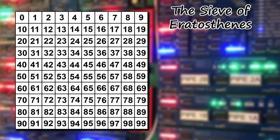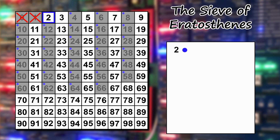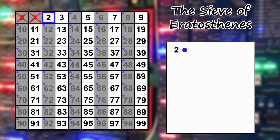We can discard 0 and 1 by definition, and each time we disregard a number we cross it out. The first number we come across that isn't crossed out is 2, so we add that to our list of prime numbers. The next step is to cross out every single multiple of that number, because multiples of a prime can't be prime themselves — in the case of 2, that's all the even numbers. Then we go back to the first step: we move on to 3, which hasn't been crossed out, so 3 is prime, and we cross out all multiples of 3.